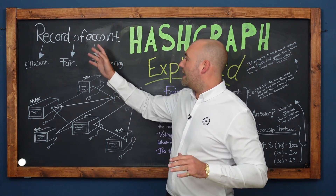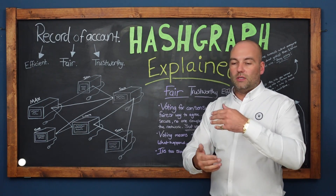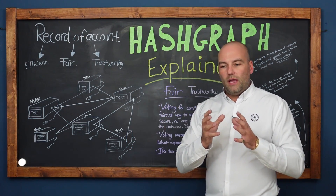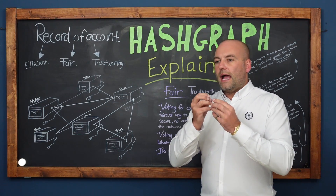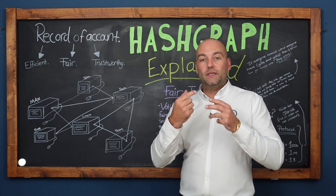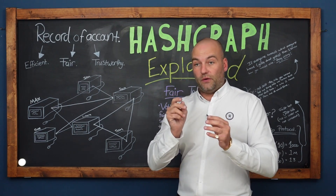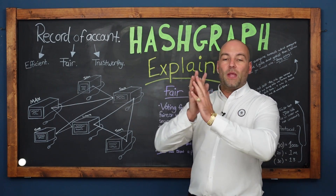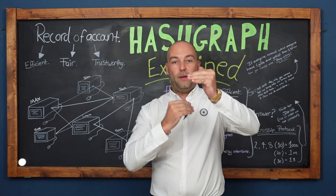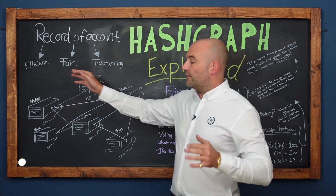Generally speaking, you want the record of account to be three main things. You want it to be efficient — you don't want it to use a lot of electricity and fuel. For example, Ethereum: if you mint an NFT or write something on the blockchain, it can use up to the equivalent energy of a petrol car driving a thousand kilometers for one transaction. So if you're in an online auction on the Ethereum platform, every single person who bids is burning a thousand kilometers worth of petrol. So it's not very efficient.